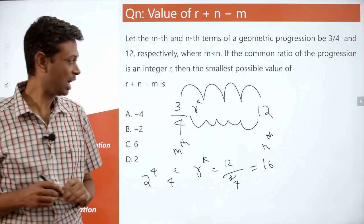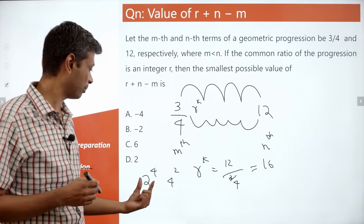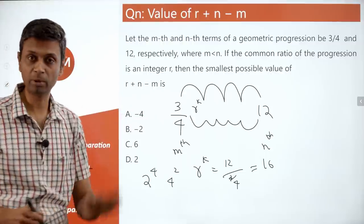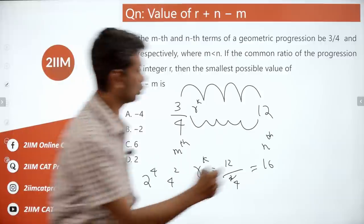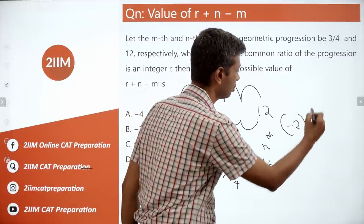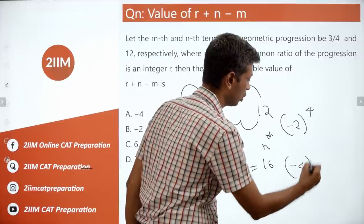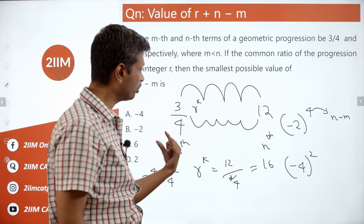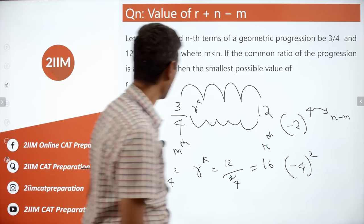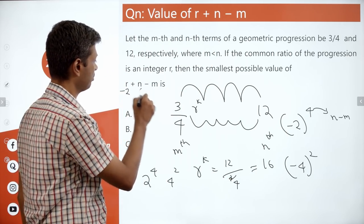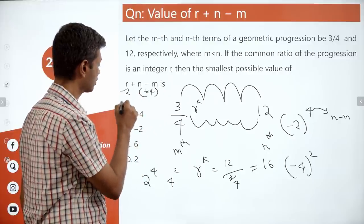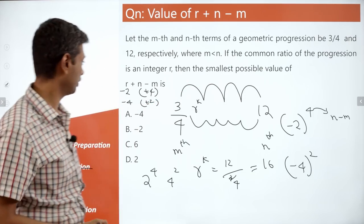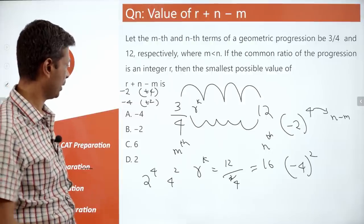r can also be negative: (−2)^4 = 16 and (−4)^2 = 16 both work. k equals n−m. To minimize r + (n−m), choose r negative. Either r = −2 with n−m = 4, giving −2+4 = 2, or r = −4 with n−m = 2, giving −4+2 = −2. So the minimum is −2.